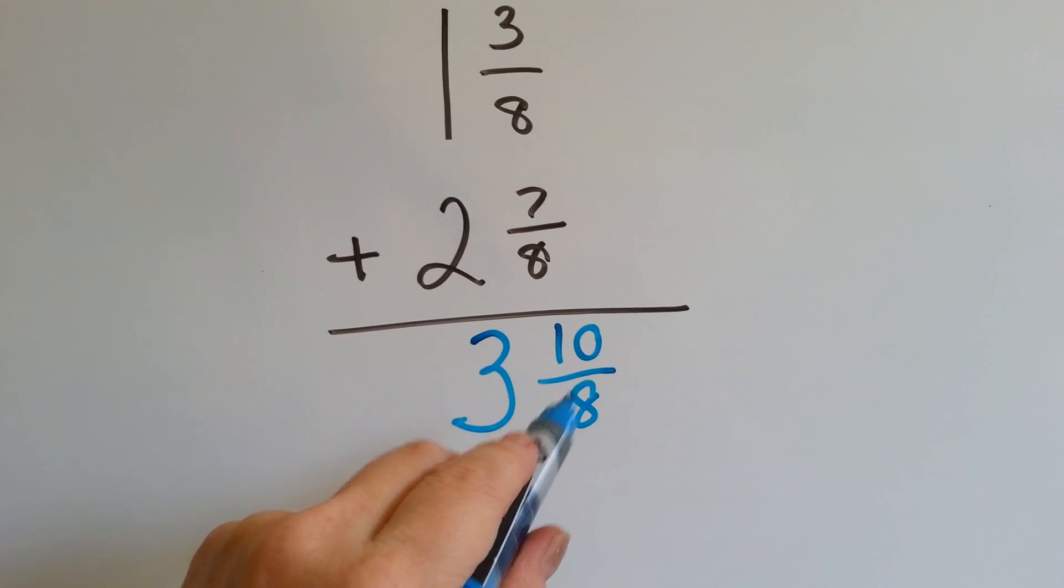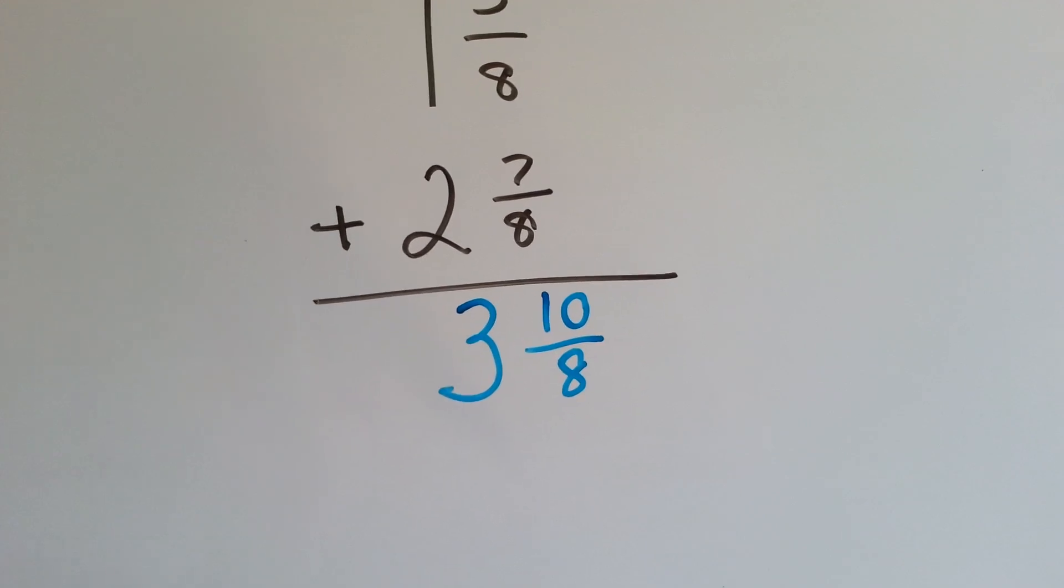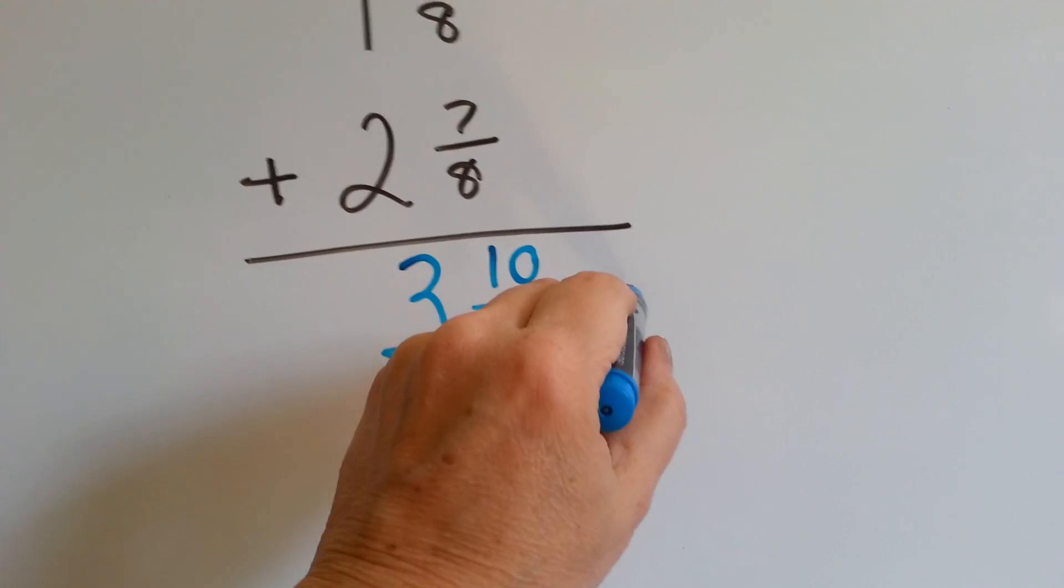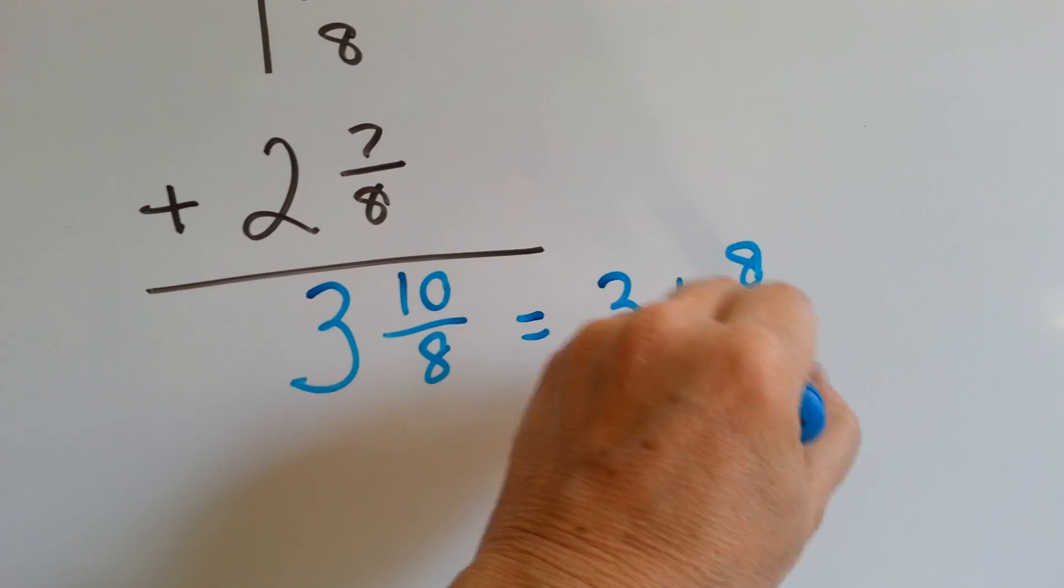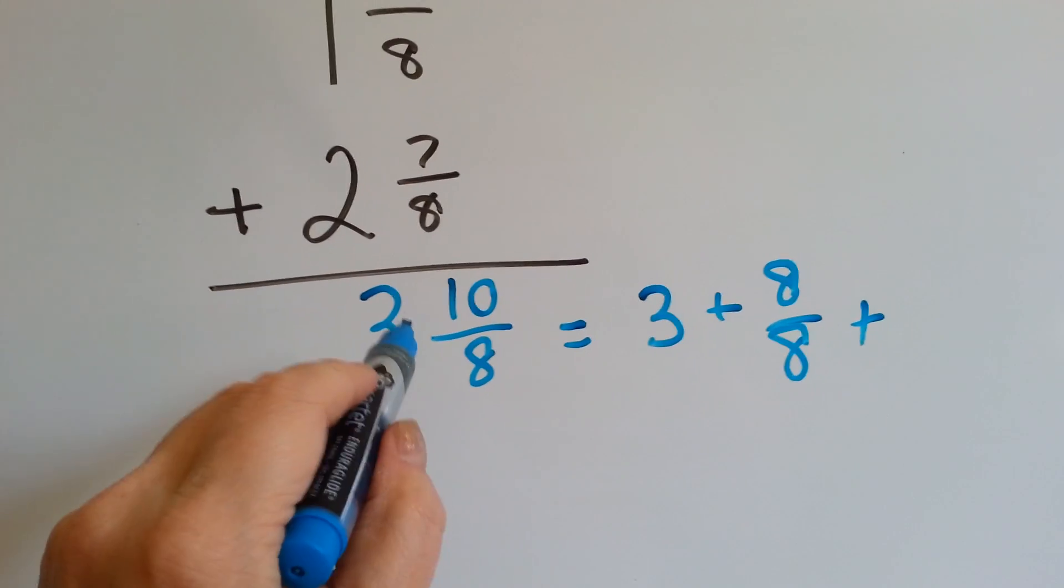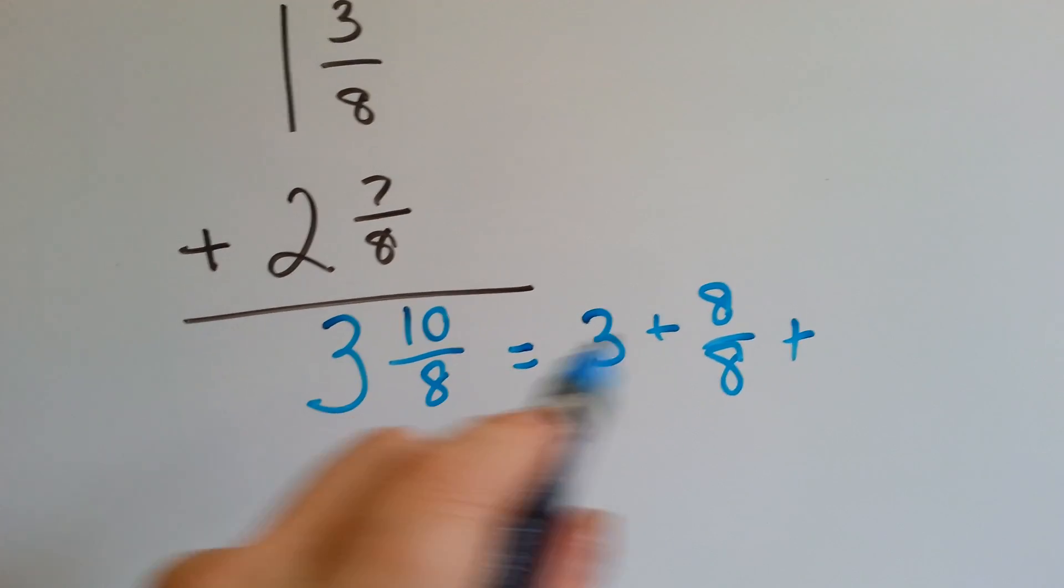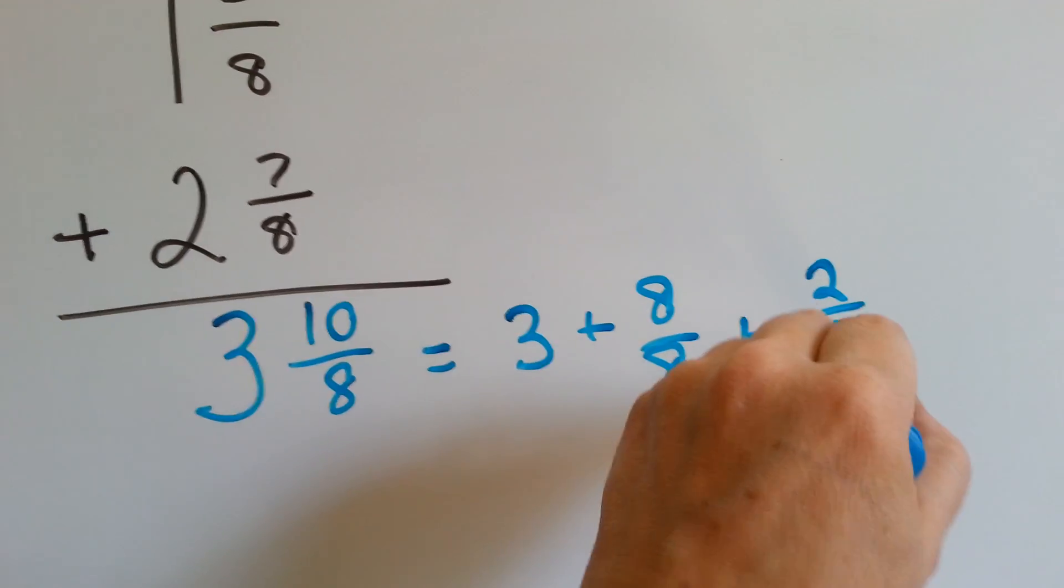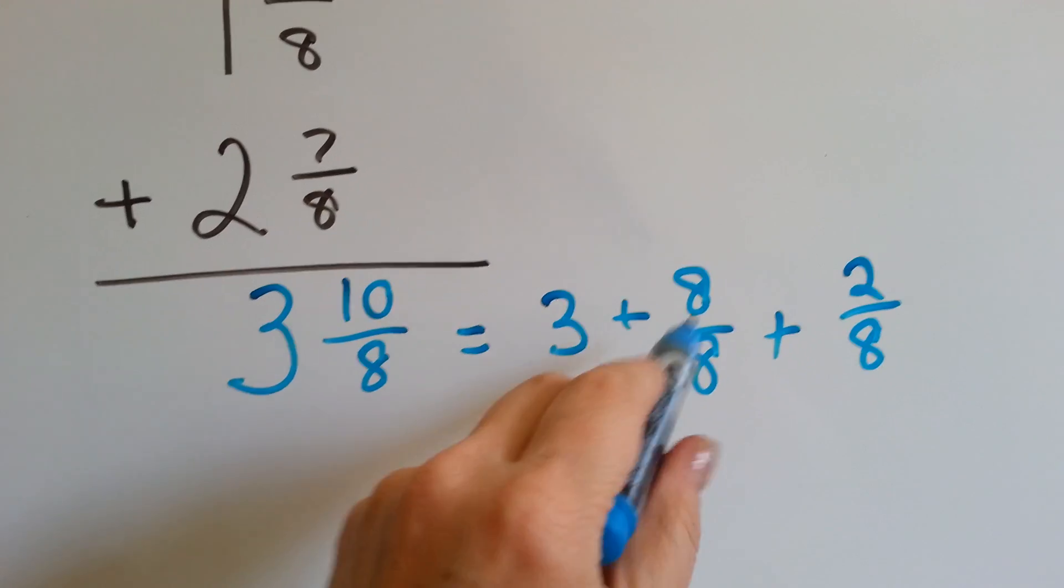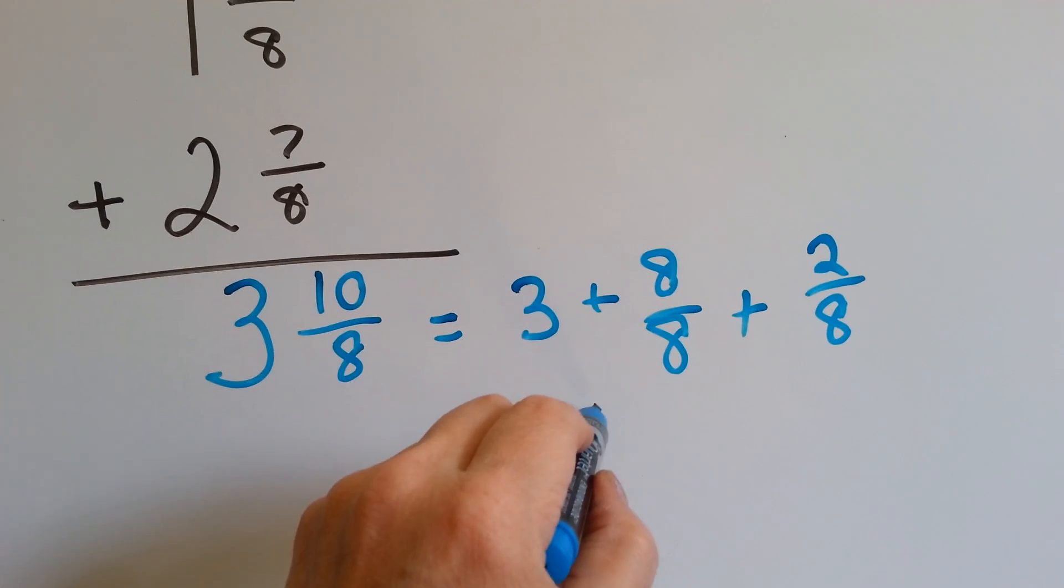Do you see the whole one hiding in this improper fraction? Is there an 8/8 in there? So, what we end up getting is 3 plus 8/8 plus how many is left over after we take the 8/8 away? Eight, nine, ten. There's a 2/8, right? We add these together. This is one whole, 8/8, right? 3 and 8/8 is a 4, and we have 2/8.